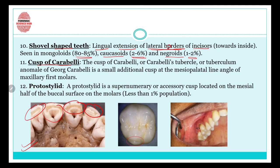Then comes cusp of Carabelli — an extra cusp seen in the maxillary first molars, also known as Carabelli tubercle or tuberculum anomale of Georg Carabelli. It is a small additional cusp seen at the mesiopalatal line angle of the maxillary first molars. You can see it marked in the picture.